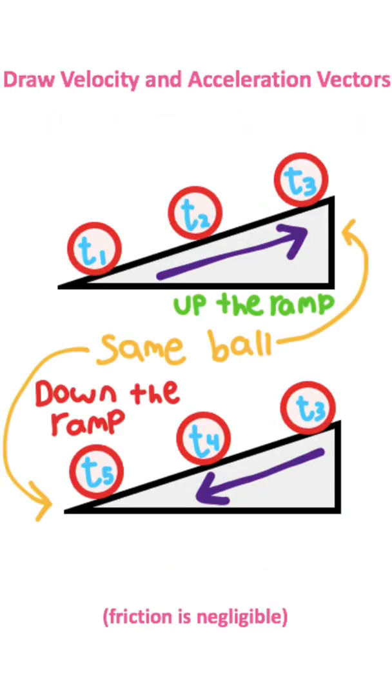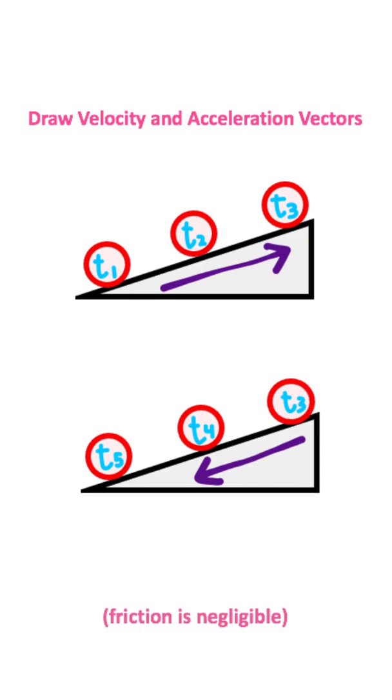Let's say we have a situation like this, where we have this ball shown at five different times. Notice that T3 is the same here and here. We're trying to find velocity and acceleration vectors acting on our ball.